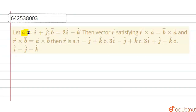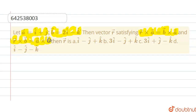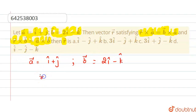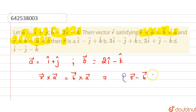In this question, we are given that a vector is i cap plus j cap, and b vector is 2 i cap minus k cap. Then we have to find vector r satisfying: r vector cross a vector equals b vector cross a vector. This implies r vector minus b vector, cross a vector, equals 0. This is equation 1.